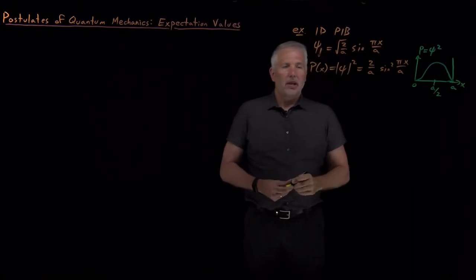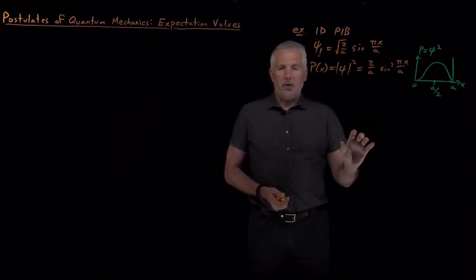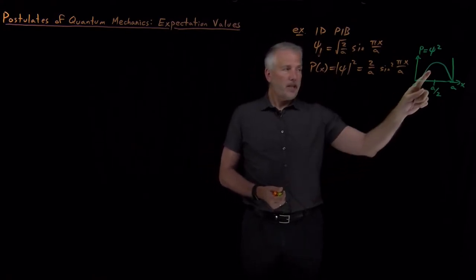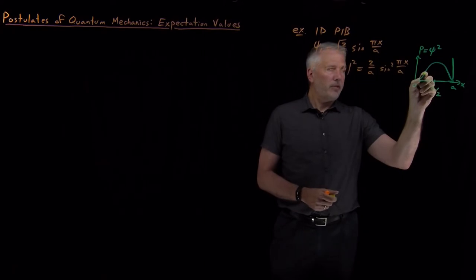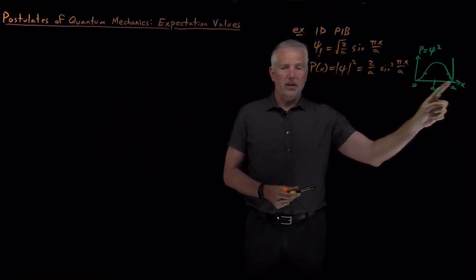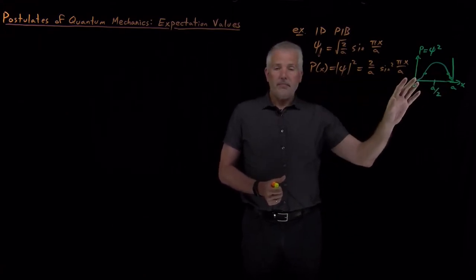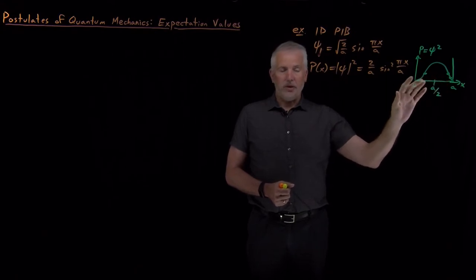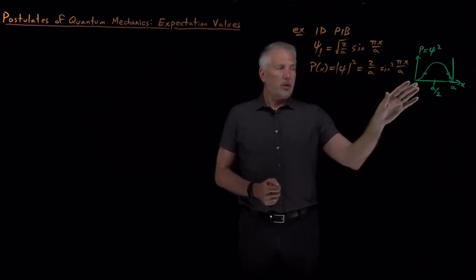So this represents the position of the particle. Since probability is related to wave function squared, all we know about the particle is the probability of finding it at any particular location. For a particle in the psi sub one ground state wave function, it's most likely to be found at the middle of the box, but it has some non-zero probability of being found elsewhere. The only places the probability is zero are at the edges of the box or outside the box. That's what I mean when I say quantum mechanics is probabilistic.